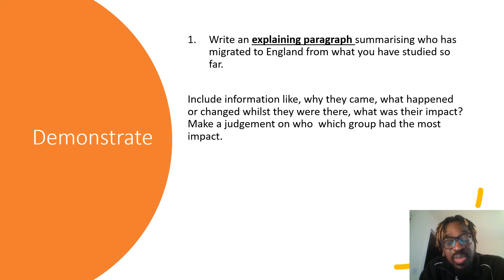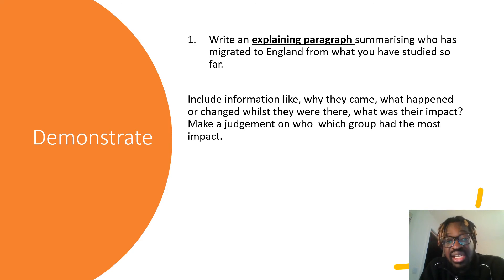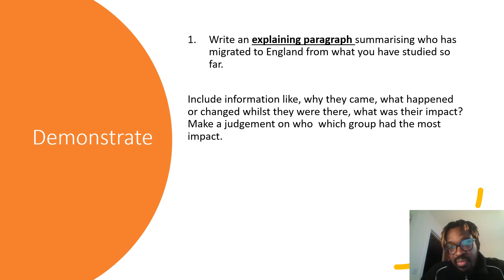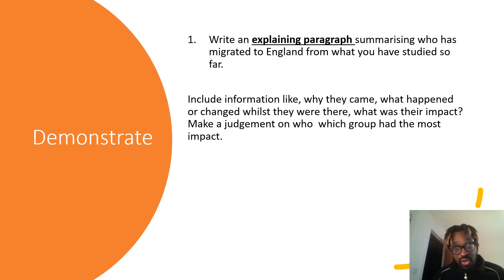The last part of your demonstrate task is to write an explaining paragraph summarizing who has migrated to England from what you've studied so far. Include information like why they came, what happened or changed whilst they were there, and what their impact was. Use your timeline for the Celts, the Romans, and now the Anglo-Saxons to write and explain in a paragraph about who has migrated to England. For example, you might write: 'Migration to England began with the Celts. They came to England because... whilst they were in England, they had a significant impact because they did XYZ. Their migration was followed by the Romans.' You're writing a paragraph summarizing the story so far.